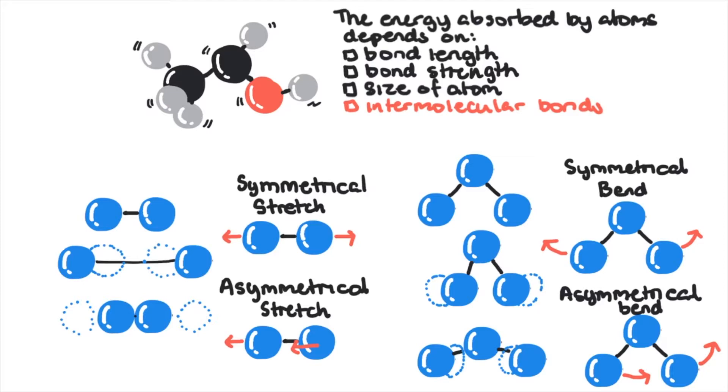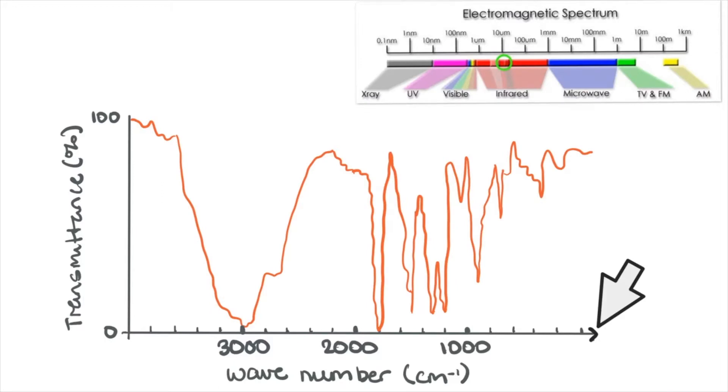Therefore, we can get a spectrum for each organic compound. So what does this spectrum look like? The x-axis represents the wave number of infrared given in 1 over centimeters. It's the range of the spectrum that corresponds from here to here.